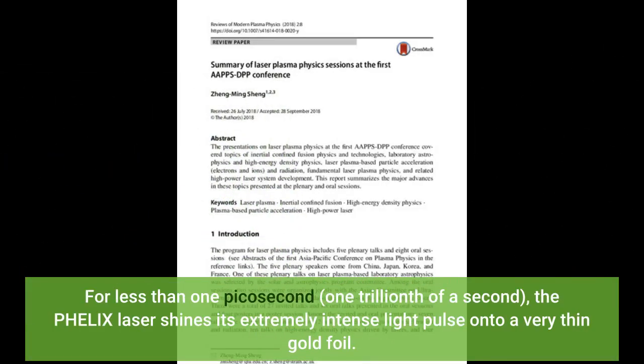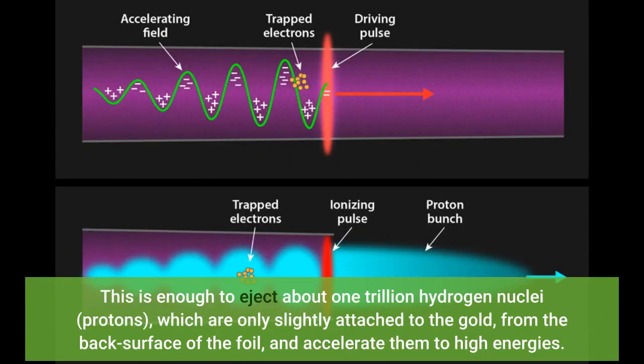For less than one picosecond - one trillionth of a second - the PHELIX laser shines its extremely intense light pulse onto a very thin gold foil. This is enough to eject about one trillion hydrogen nuclei, or protons, which are only slightly attached to the gold, from the back surface of the foil and accelerate them to high energies.